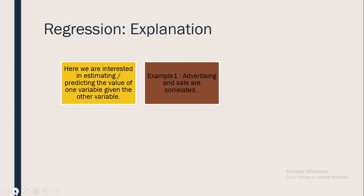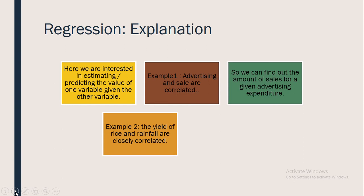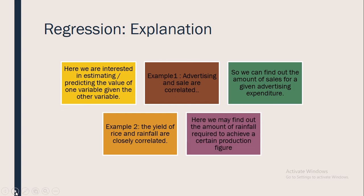For example, if we know that advertising and sales are correlated, we can find the expected amount of sales for a given advertising expenditure, or the required expenditure to attain a given amount of sales. Similarly, if we know that the yield of rice and rainfall are closely related, we may find the amount of rain required to achieve a certain production figure.